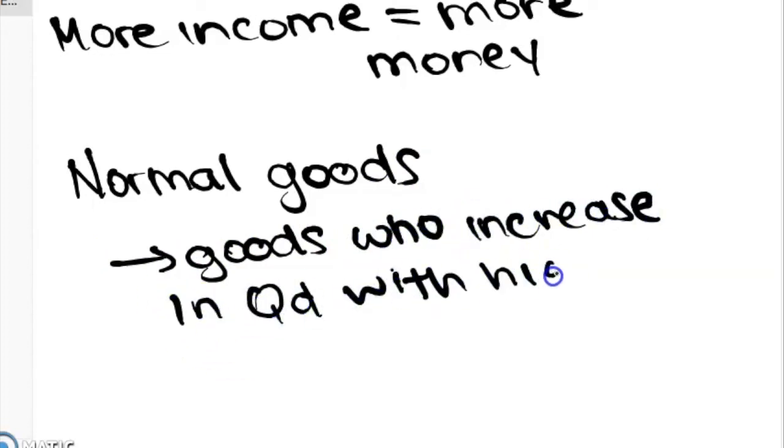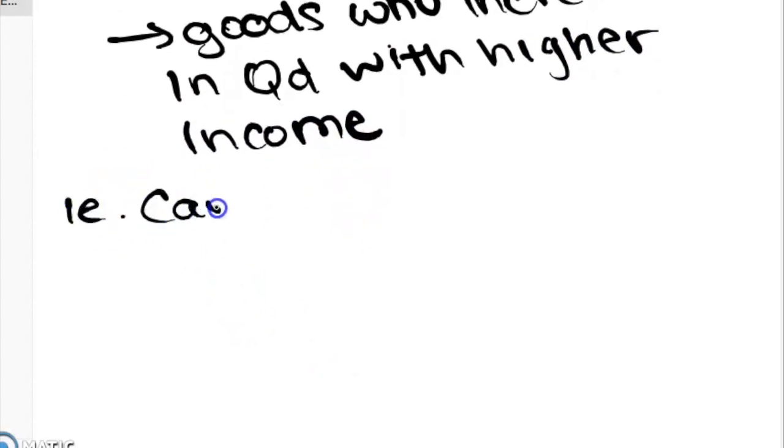Normal goods are goods like, for instance, cars, which when income increases, people demand more of them.